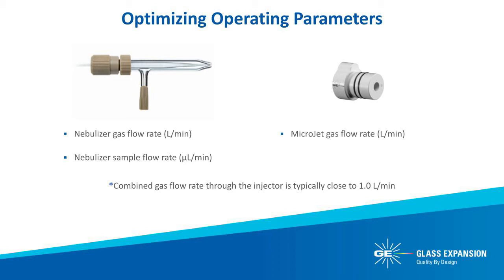We will review the optimization of nebulizer gas flow rate, sample flow rate, and microjet gas flow rate. These operating parameters affect the transport efficiency of the aerosol and, with respect to single cell analysis, the integrity of the single cells remaining intact during nebulization. The combined gas flow rate of the nebulizer and microjet typically is approximately equal to one liter per minute argon in order to create a robust plasma.